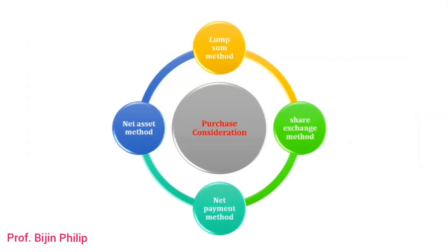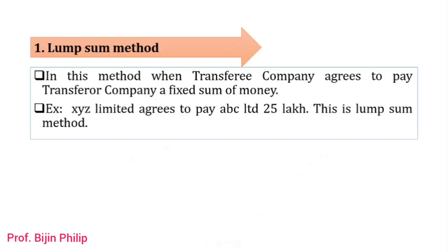Now we'll see what are the different methods for calculating purchase consideration. The first one is the lump sum method. Compared to all other methods, lump sum method is one of the simplest methods to calculate purchase consideration. In this method, the purchasing company agrees to pay the transfer company a fixed sum of money — the purchase amount is directly given.